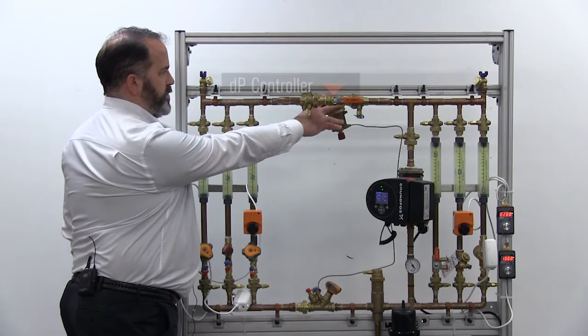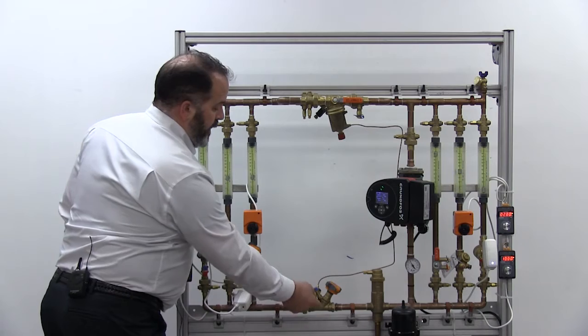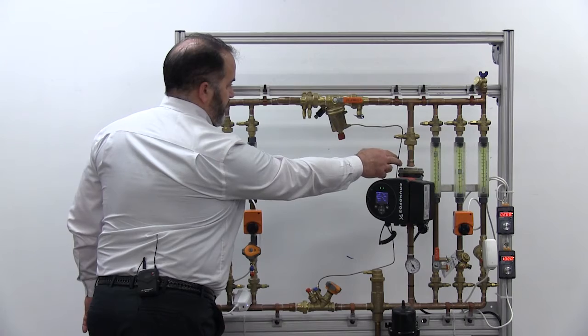So if you look at our system here, we have what we call a differential pressure control valve up in the return side of this branch with these three coils, and then we still have our partner valve on the inlet side. Now connecting those two valves, we have what we call a capillary tube.